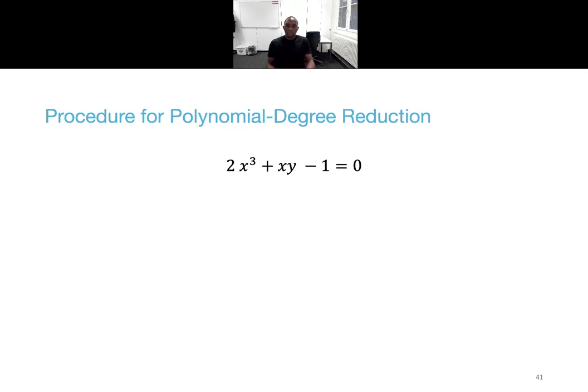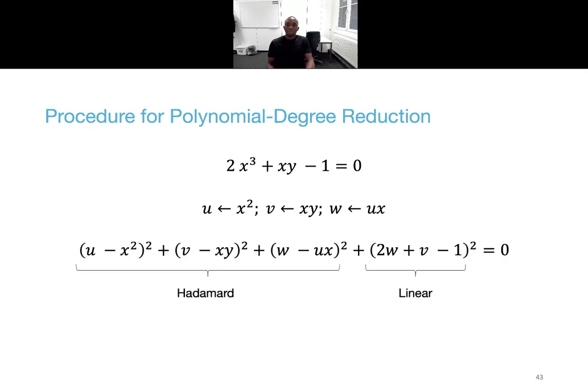Take this bivariate equation as an example. The first step is to introduce a new variable u which represents x squared, v which represents xy and w which represents ux which is equal to x to the power 3. The next step is then to insert these new variables in the original polynomial and enforce the relation between the new variables and the old ones by adding the terms u minus x squared and squaring that. All the terms are squared since the sum of square values is 0 if and only if all of them are 0. From this new polynomial one can then directly infer the Hadamard product here, so u is equal to x squared, v is equal to xy and the linear constraints. And one can then use the argument for the previous relation over the integers.